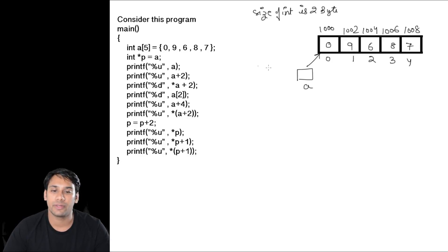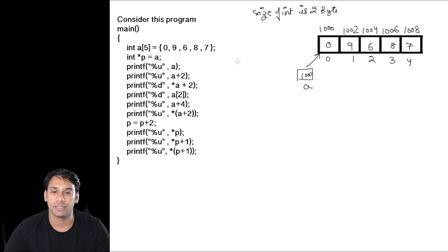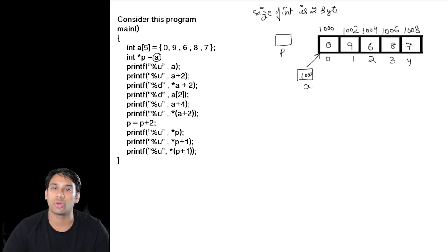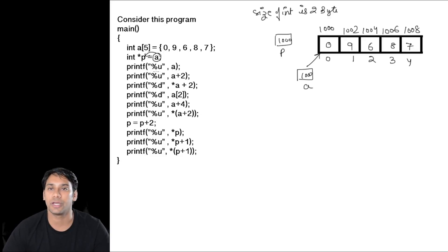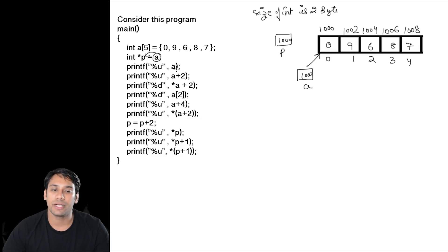Now A is going to store 1000. In the next line, I have taken a pointer P and I am equating it with A. That means P stores the value which A stores — 1000, which is an address. When I print A using printf with %u (unsigned integer format), it prints the base address 1000.